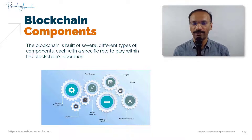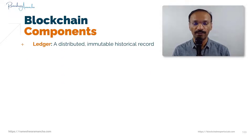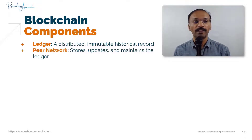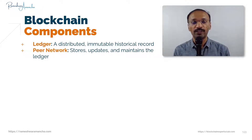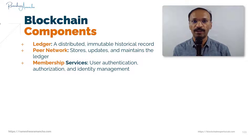The first component we are going to explore is the ledger — a distributed, immutable historical record. The peer-to-peer network, which we already learned about, stores, updates, and maintains the ledger.